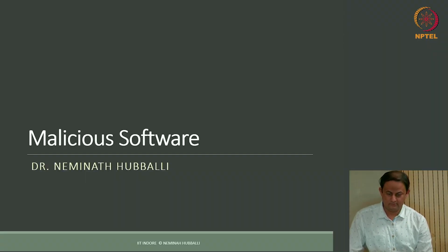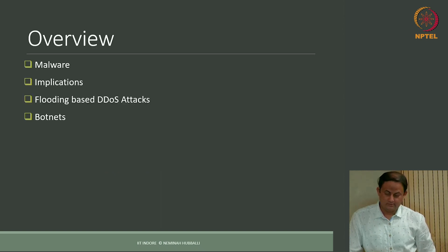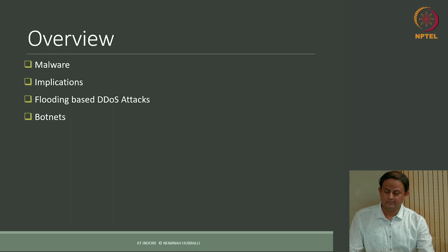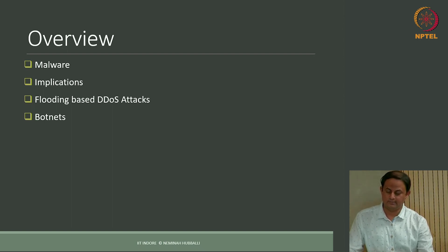Today we will start with a discussion on how attacks can be mounted on systems. In particular, we will try to understand what malicious software is and its implications for security — what it can actually do. We will see a class of attacks called denial of service and distributed denial of service attacks, and then briefly discuss botnets, which are also a class of malicious software. That is the agenda for today.